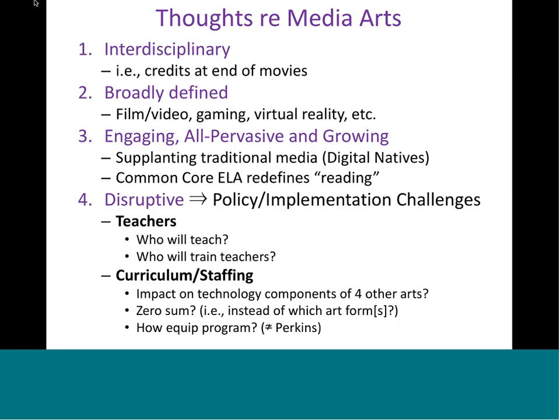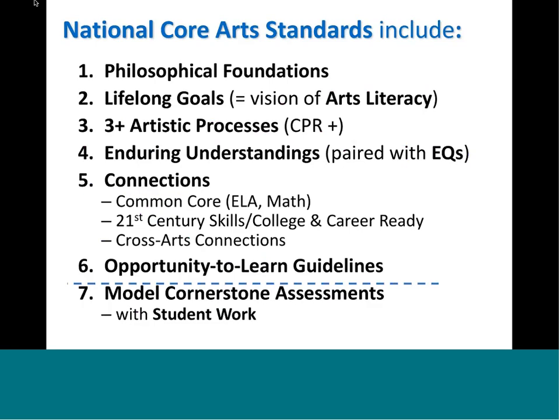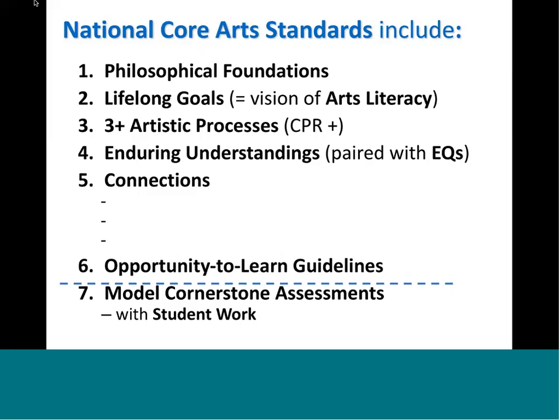The question of how to equip these programs comes up. Perkins money, which has traditionally gone exclusively to vocational or technical education, has not been available in most districts to arts programs. Now, these are all components you'll find in your National Core Arts Standards online. We provided the philosophical foundation this time, and clearer terms and corresponding goals. I'll talk about the artistic processes, enduring understandings, and connections. There's a separate document that lists opportunity-to-learn guidelines — the conditions students need to achieve these standards in terms of instructional time, equipment, and classroom space. There are also Model Cornerstone Assessments posted online that are worth your attention.